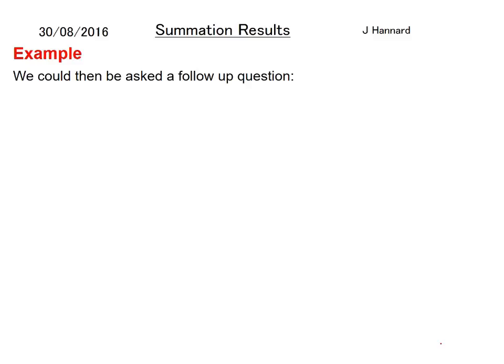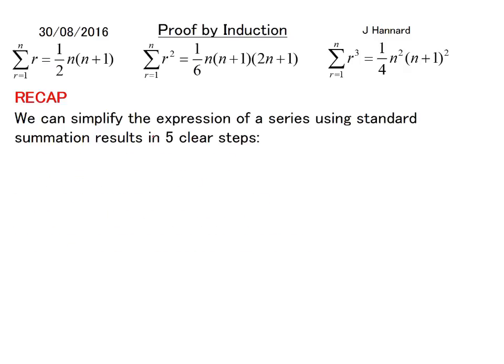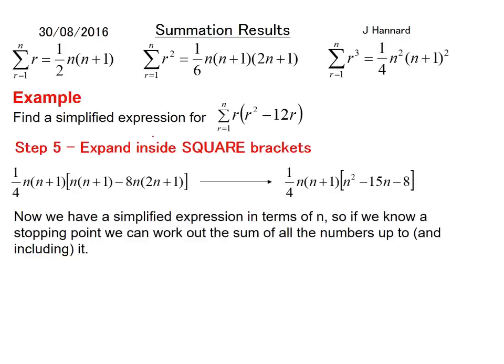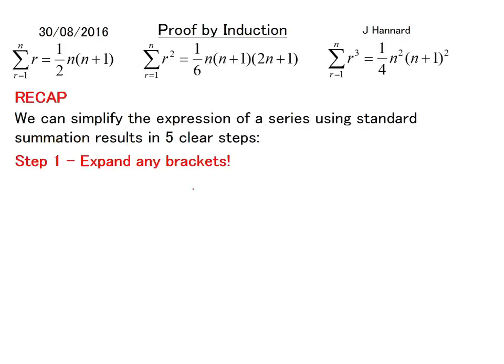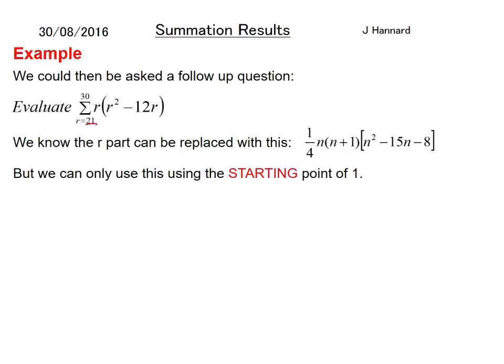But then you could be asked a follow-up question. Evaluate the sum from 21 to 30 of the thing we've just simplified. We know that the r part can be replaced with this. If we go back all the way to here, that is an r of 1, so we can only use a starting point of 1. But there's a problem because on this one there's a starting point of 21. So we're going to have to be very clever and use theories of number lines.